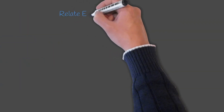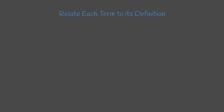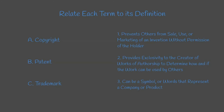Question 3: Relate each term to its definition. A. Copyright. B. Patent. C. Trademark. Copyright provides exclusivity to the creator of works of authorship to determine how and if the work can be used by others. A patent prevents others from sale, use, or marketing of an invention without permission of the holder. A trademark can be a symbol or words that represent a company or product.